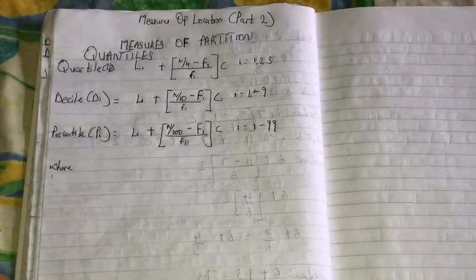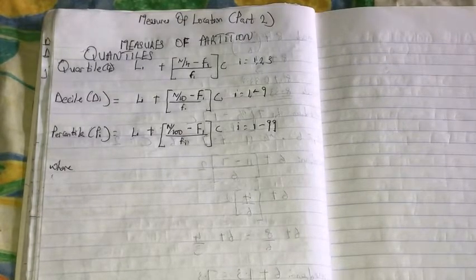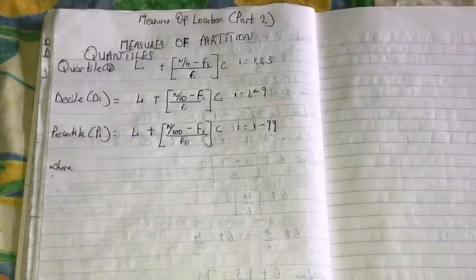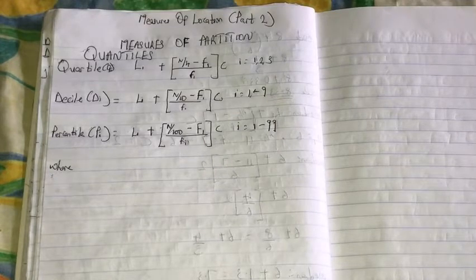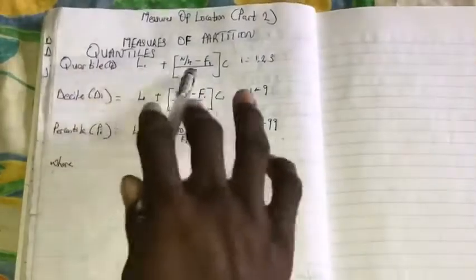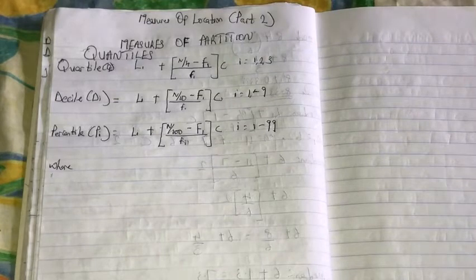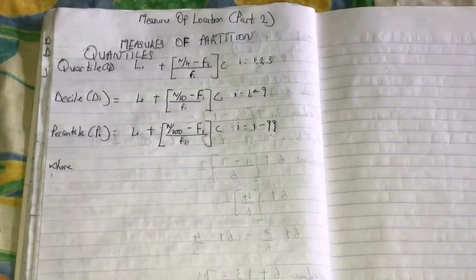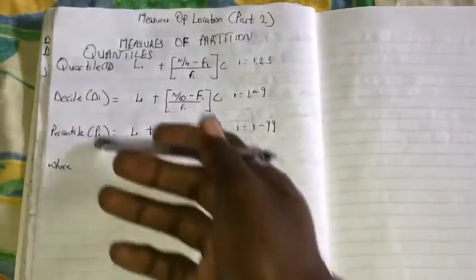The method of computation for the quartiles follows the same procedure for the median. For instance, the position of the first quartile for a group is located by n divided by four, and the value is determined graphically from an ogive or by the use of formulas done in the median. Also, the position of locating the third quartile, the seventh decile, is seven over ten, and the tenth decile is ten percent. We should know that the second quartile, 50th decile is the median.